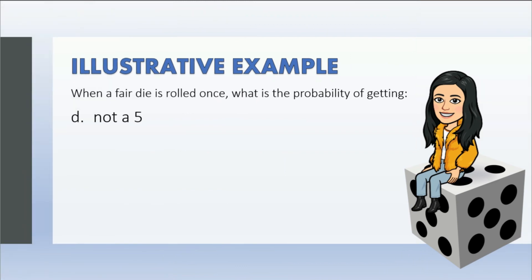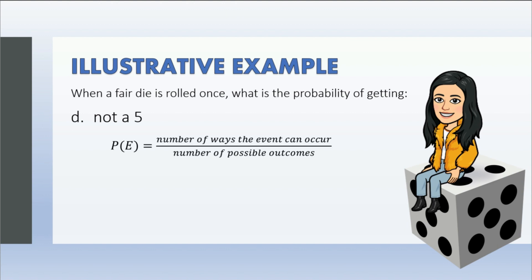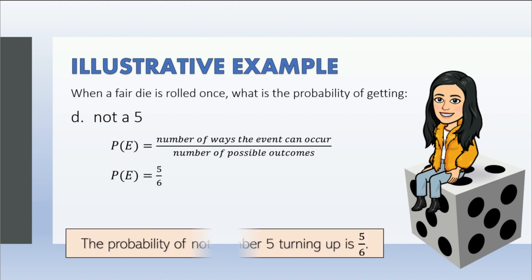Lastly, probability of getting not a five. We use the formula for probability of simple events. How many numbers are there in a die that are not five? It's five — we have one, two, three, four, and six. For the number of possible outcomes, again we have six. We now have five over six. Therefore, the probability of not number five turning up is five over six. It means it is likely to happen.